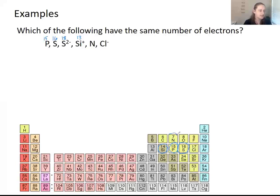Nitrogen is up here, it has seven electrons. Chlorine has 17, but again, it's negative. So we have to add an extra electron to give us a total of 18. So the only two of these that have the same number of electrons are sulfur 2 minus and chlorine minus. They both have 18 electrons.